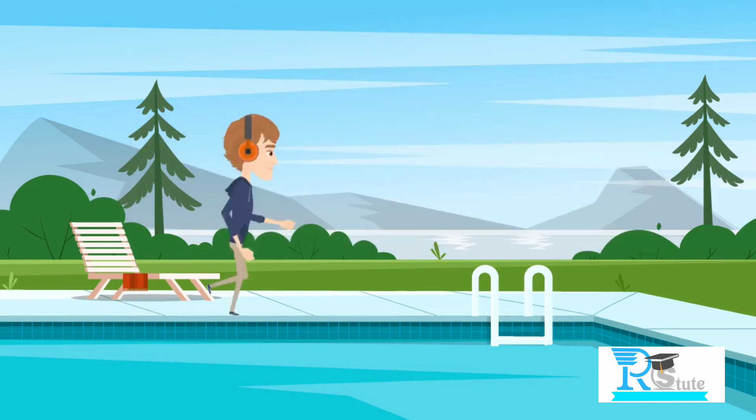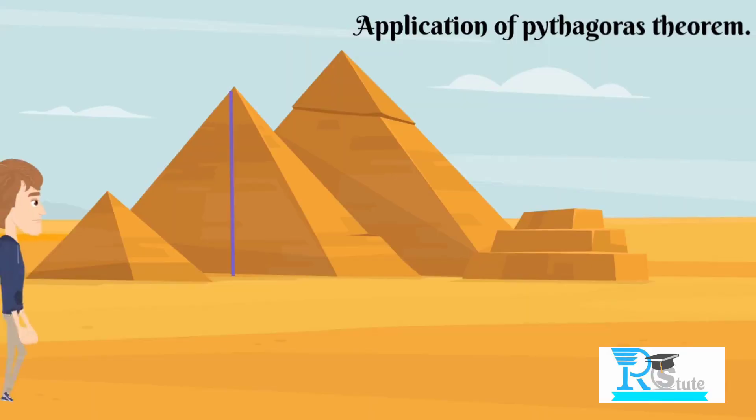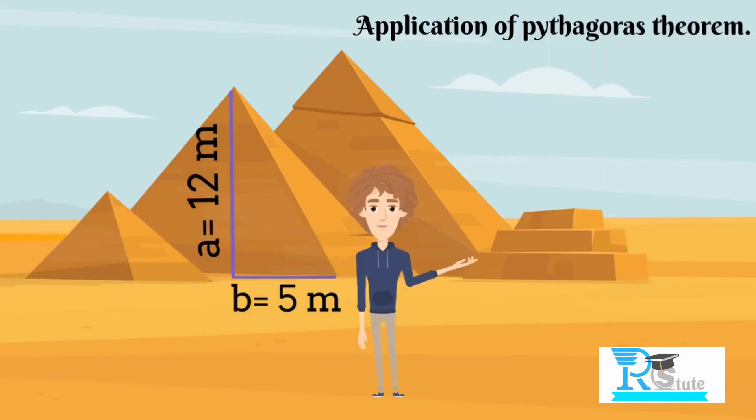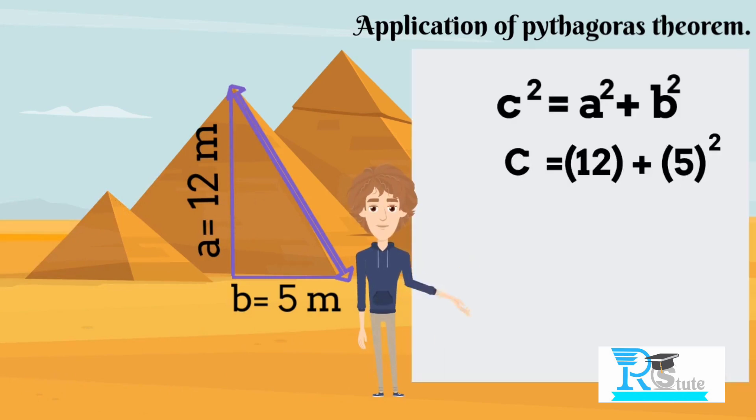Let's go back to our problem. Here, A equals 12 meters and B equals 5 meters. Let's put the values in our formula. So, C² = 12² + 5².